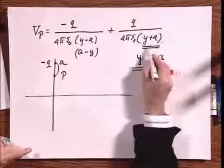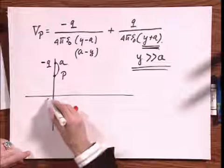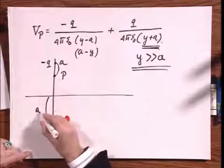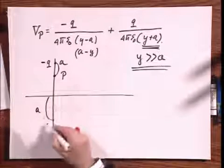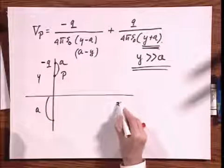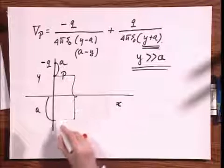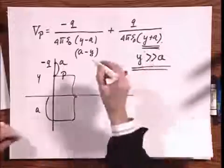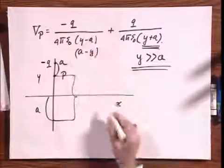However, this part does not change because if I am here at a distance a below the y-axis, this is the y-axis and this is the x-axis, then this separation remains y plus a. So it's only this term that changes.